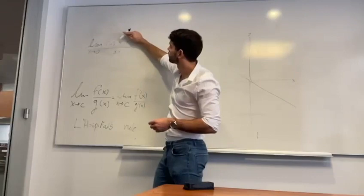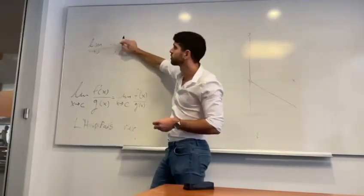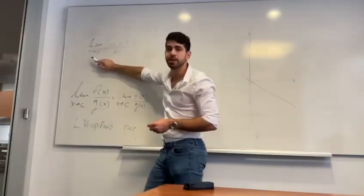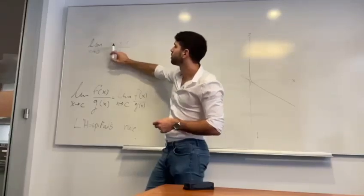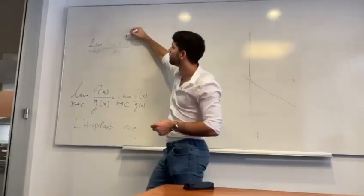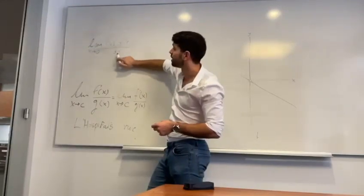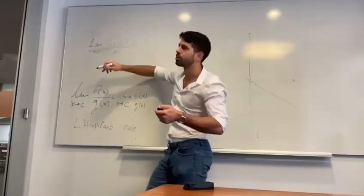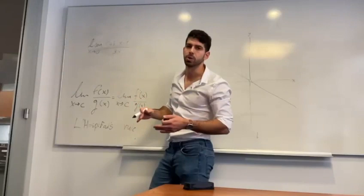In our example, cos x minus 1 divided by 3x, and we're looking for the limit as x approaches 0. If we plug in 0 in cos of x minus 1, this is 0. If we plug in 0 at 3x, this is also going to be 0. So we ended up with 0 divided by 0,